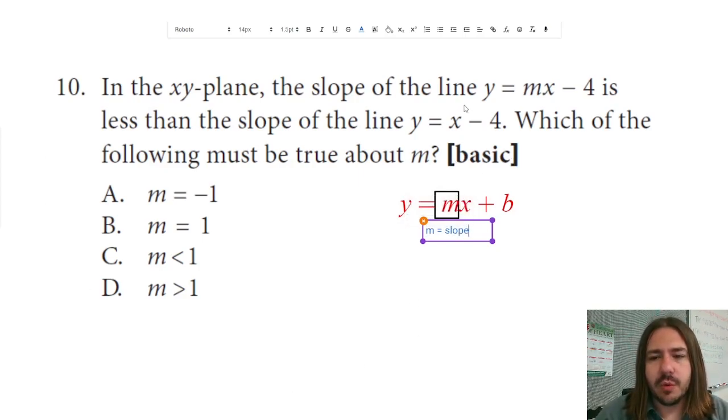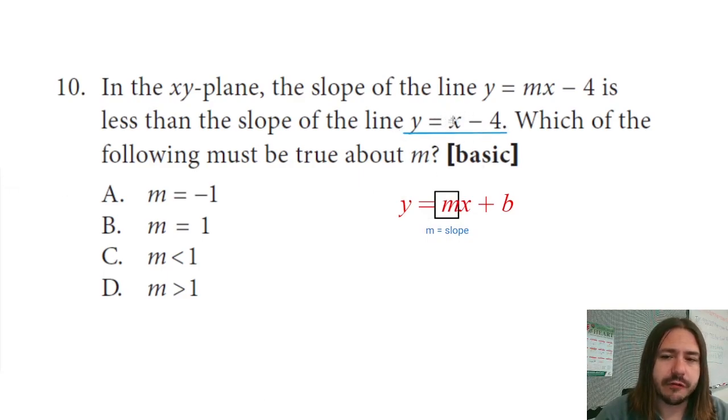Now, for the equation that's given, y equals x minus 4, if you do not see a number in front of the x, there is an assumed 1 here. If it's saying that mx minus 4 has a slope that's smaller or less than the slope of this, that means that this m value must be smaller than 1. And so our answer is c.